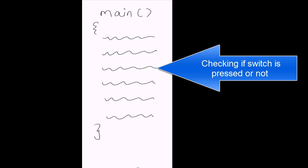This way of doing things will work but is not efficient, because we are wasting CPU cycles to keep checking every time whether the switch is pressed or not. This situation can be improved and made more efficient with the help of interrupts. By using interrupts, we don't have to check every time if the switch is pressed. We just configure and initialize the interrupt on the microcontroller pin where the switch is connected and write our Interrupt Service Routine.